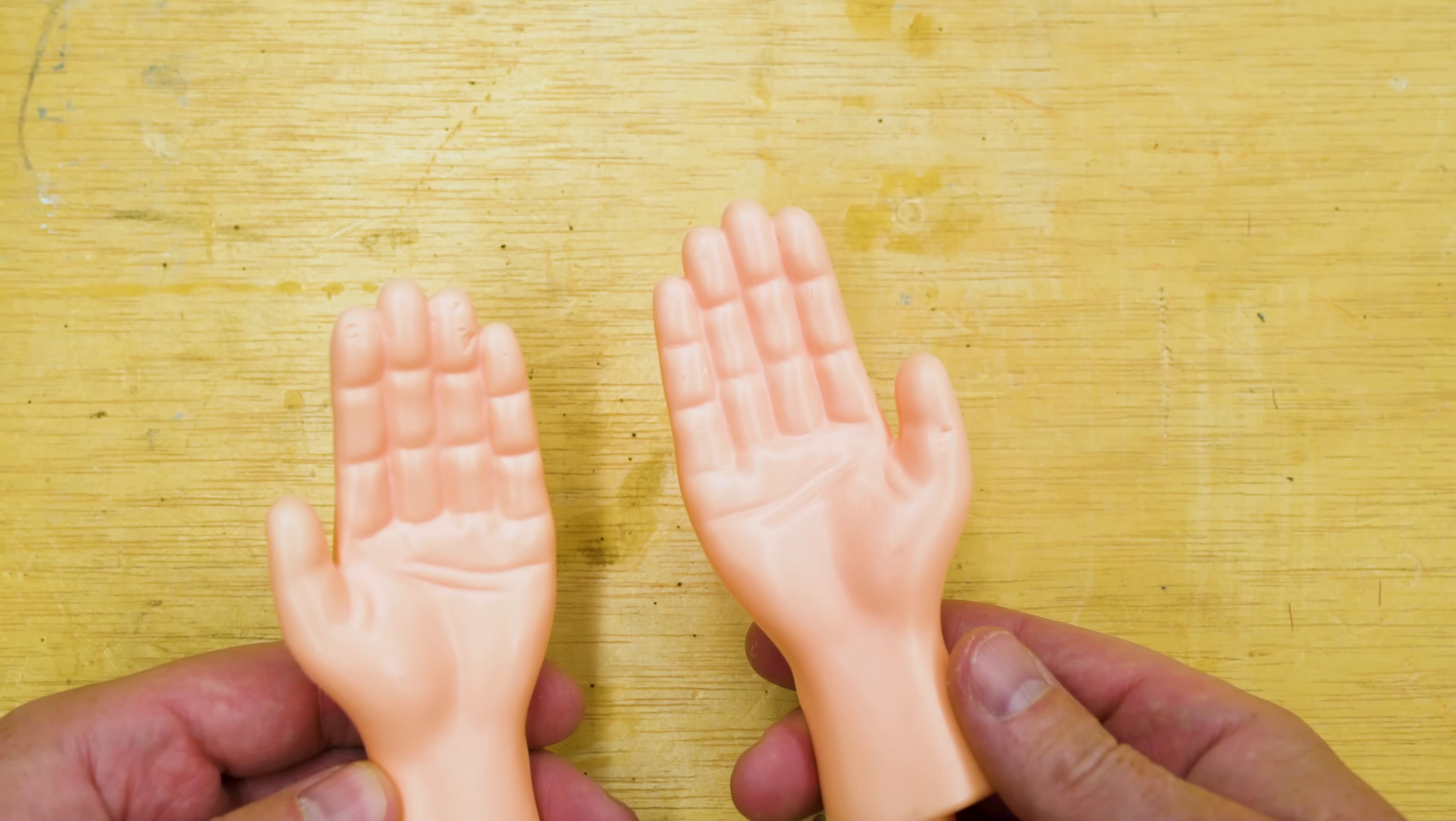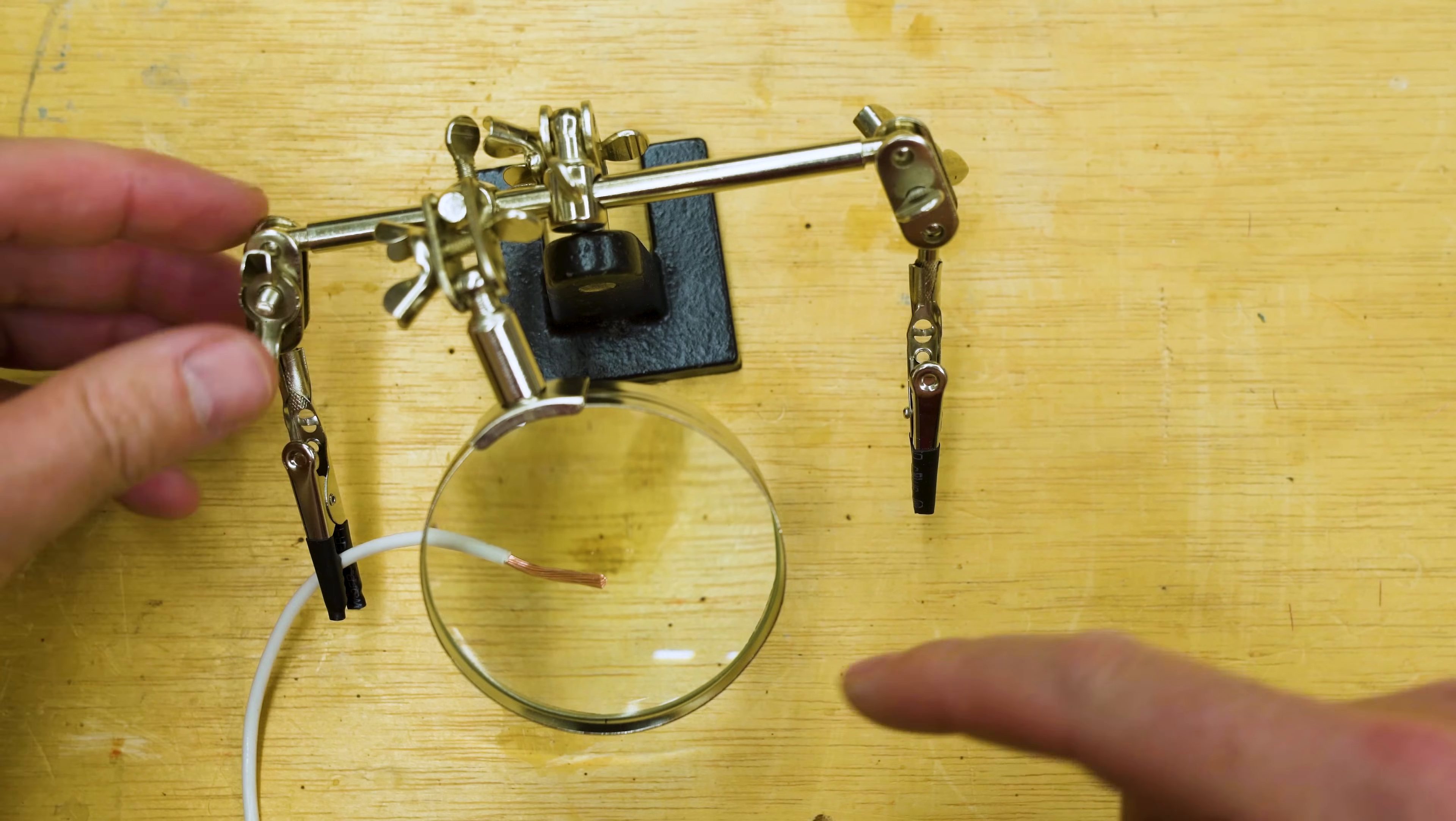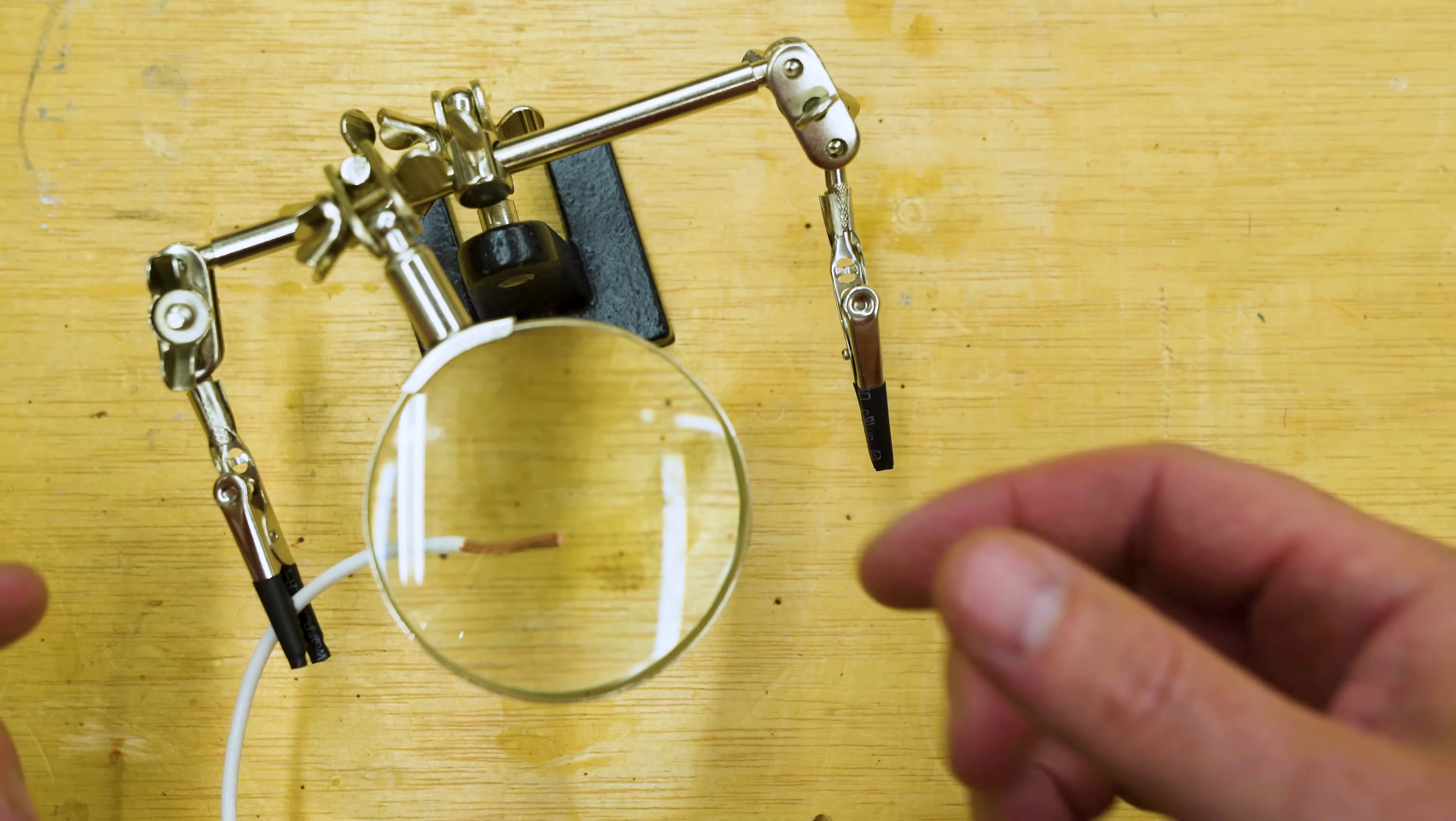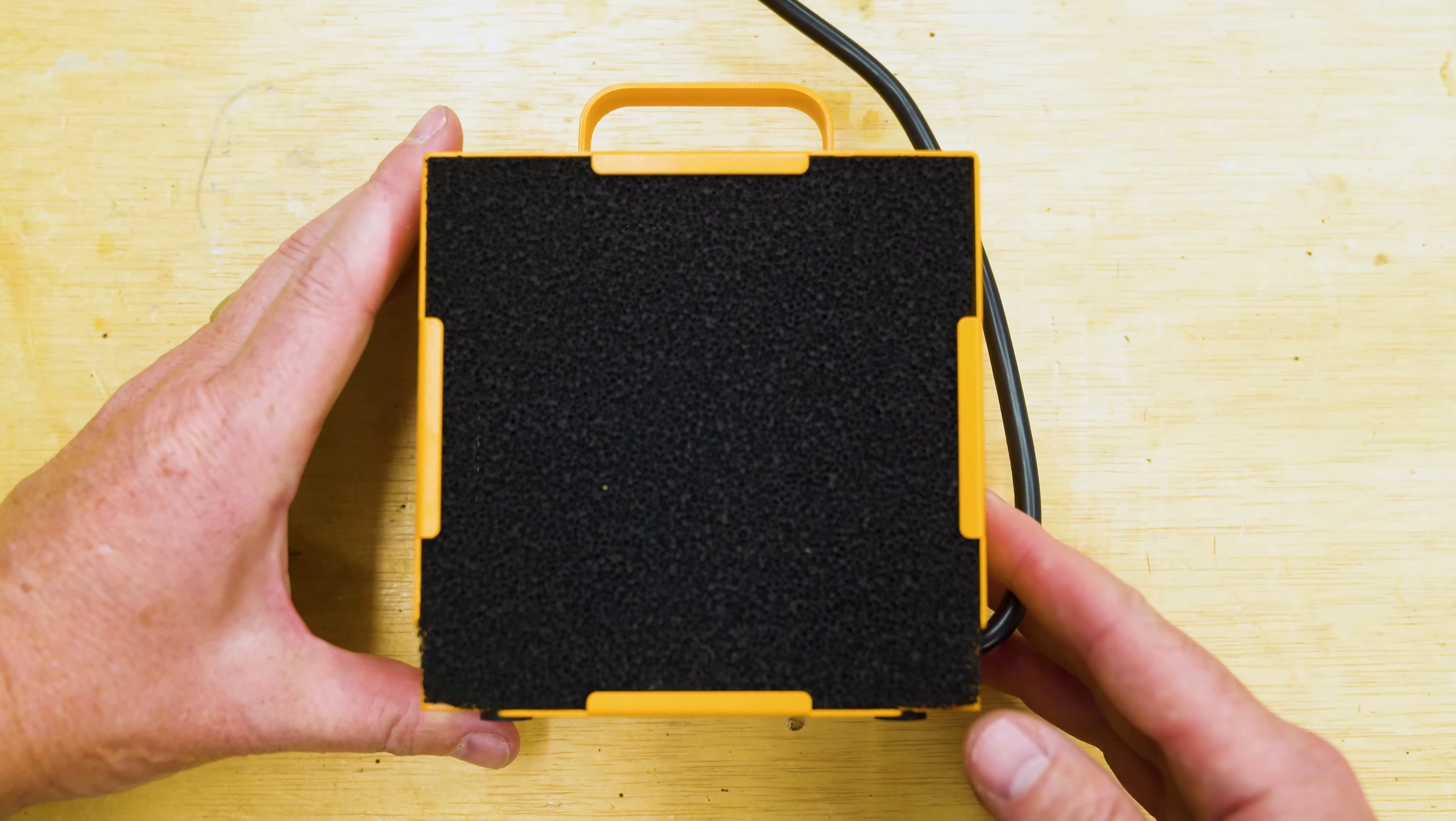Another accessory that's really nice to have is a set of helping hands like these, and these can hold your, wait, no, not those ones, these ones, helping hands. And these can hold your wires while you're working, little magnifying glass. This is a pretty inexpensive little setup and it's totally flexible and adjustable. And it just makes it so that you can have something holding your wires in place as you hold both the solder and the soldering iron.